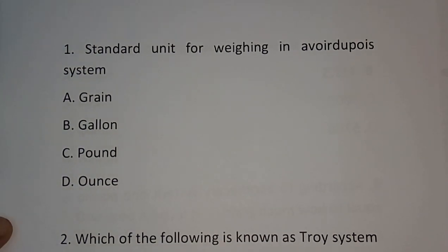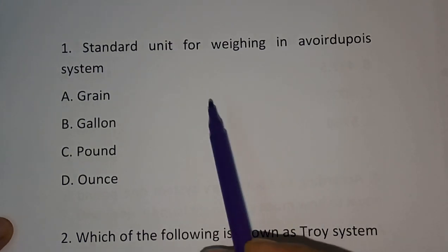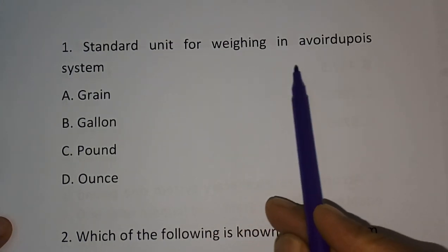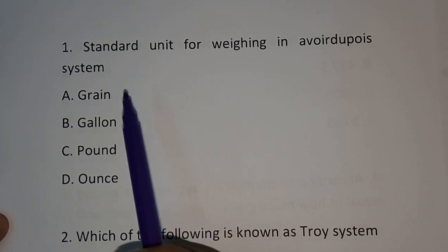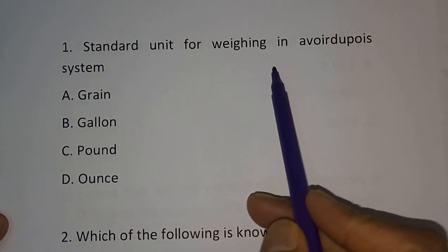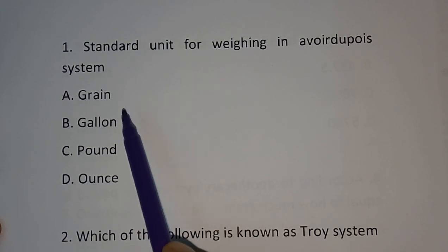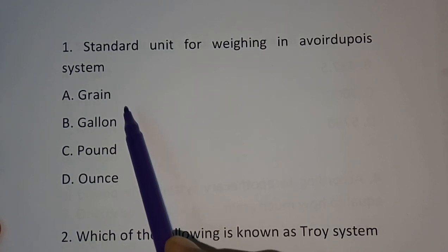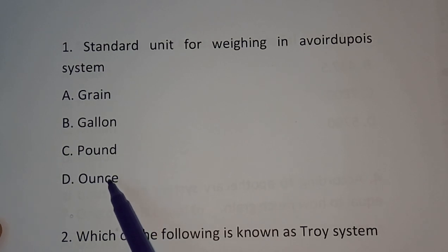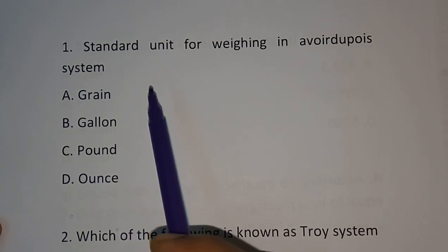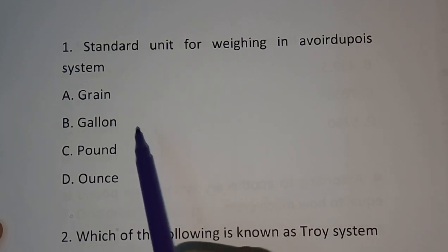The first question of this chapter: What is the standard unit for weighing in the avoirdupois system? Options are: grain, gallon, pound, ounce.